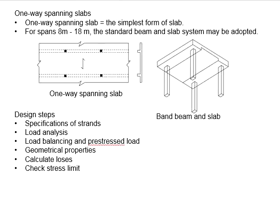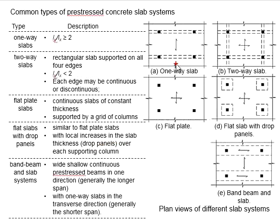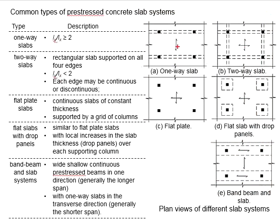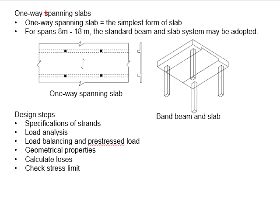One-way spanning slab. The one-way spanning slab is the simplest form of the slab where the loads on the slab are to be transferred in one direction to the adjacent beam member. Among all these five types of the slab, the one-way slab and also the band beam and slab systems are under the category of one-way spanning slabs.